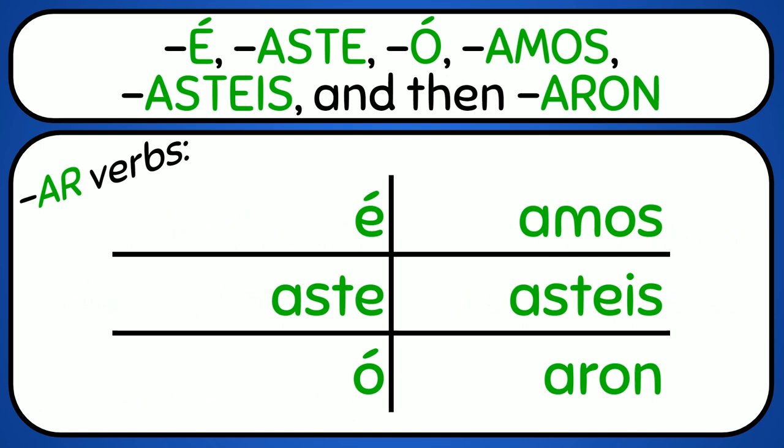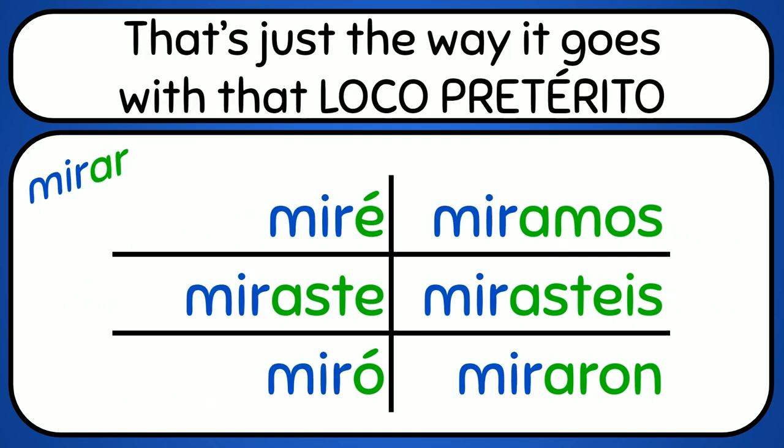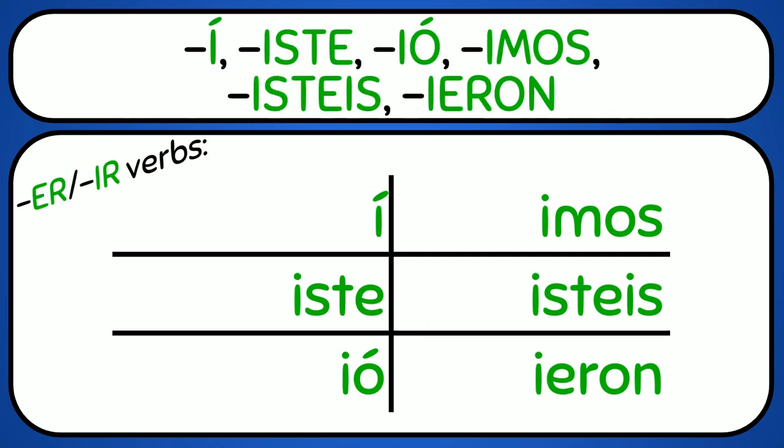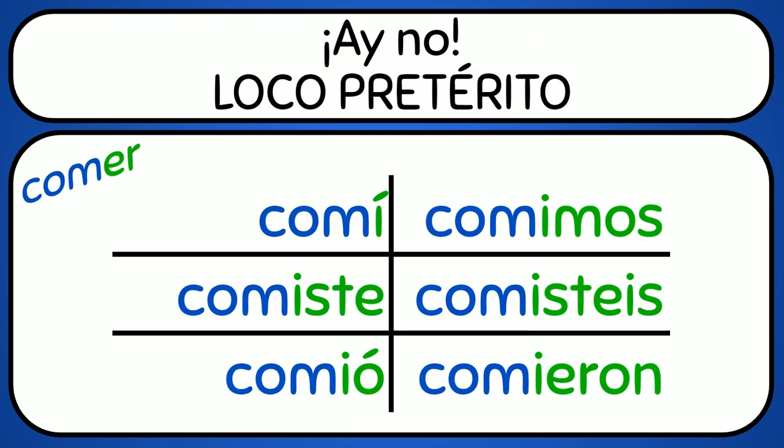É, aste, ó, amos, asteis, aron. That's just the way it goes with that loco preterito. É, aste, ó, amos, asteis, aron. Ay no! Loco preterito!